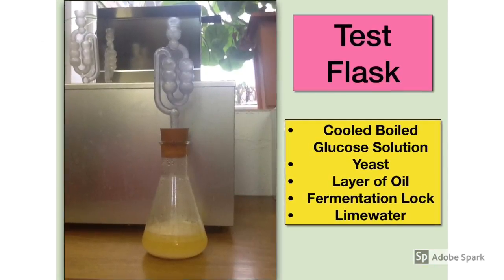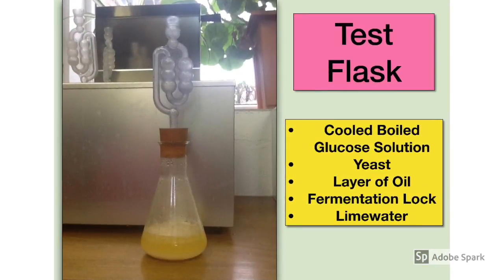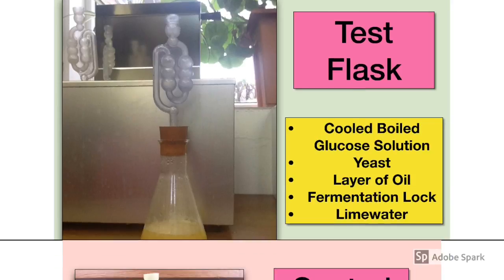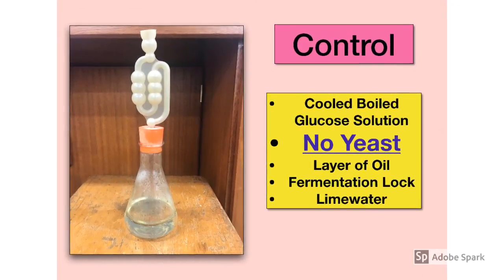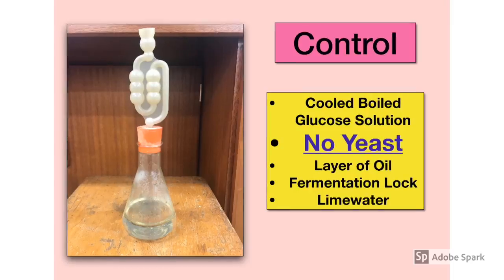We set up our test flask in the lab. It was a conical flask into which was placed cooled boiled glucose solution and some yeast. A layer of oil was put on top of this, and a fermentation lock into which we put some lime water. The control was exactly the same setup — the conical flask with cooled boiled glucose solution and a layer of oil on top, and the fermentation lock with lime water — but there was no yeast.